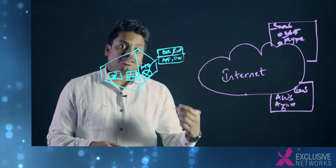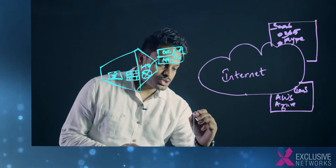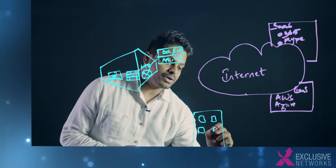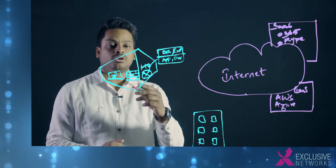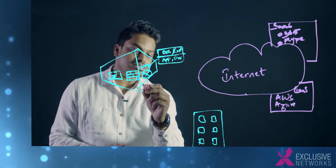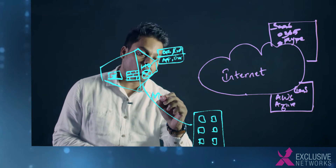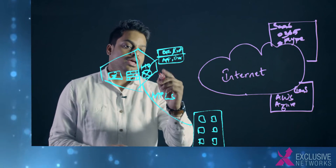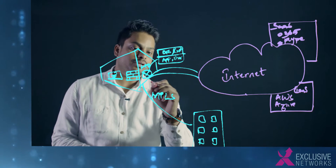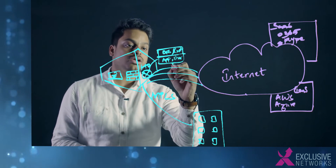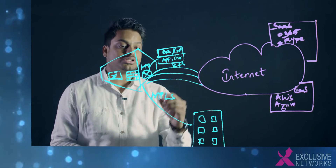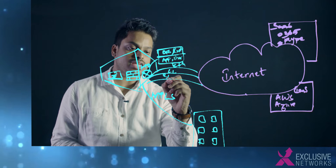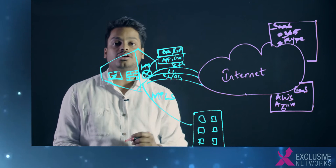Now, in a distributed enterprise, you also have branch offices. You may have many branch offices where you cannot afford to have all the security solutions in place. So you're going to backhaul all of your internet traffic over an expensive MPLS link into your head office. Over here, you can have multiple internet links for redundancy — one of those internet links can be your traditional Ethernet and a leased-line connection for business-critical applications, and a 3G or 4G network as a backup.